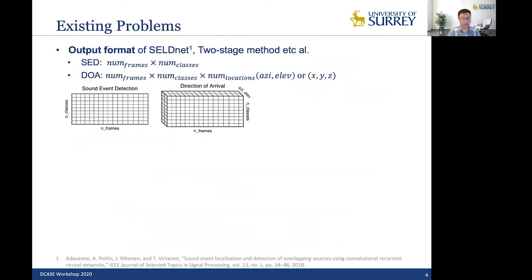Now I'll talk about some existing problems. The first one is the output format of some of the networks, or some common networks. For example, the SELD net or two-stage method. The SED output format is the number of frames by number of classes. And the DOA output format is the number of frames by number of classes by number of locations. Here we have inherent problems. Can you see what it is?